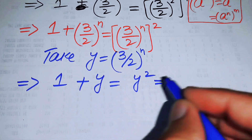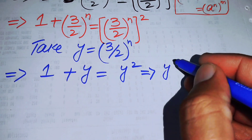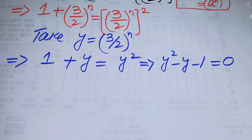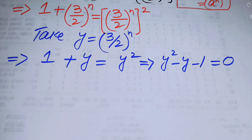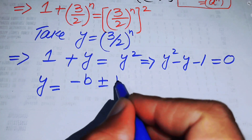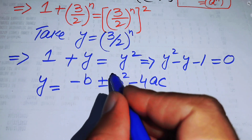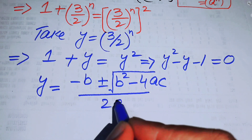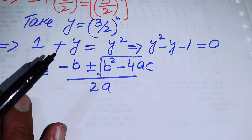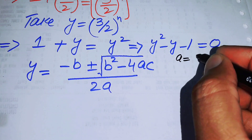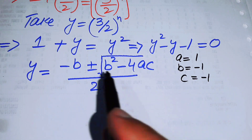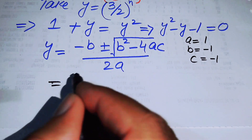Substituting y, we get 1 plus y equals y squared. Moving all terms to one side gives us y squared minus y minus 1 equals 0. We can now solve this quadratic equation using the quadratic formula. Here the values are: a equals 1, b equals minus 1, and c equals minus 1.